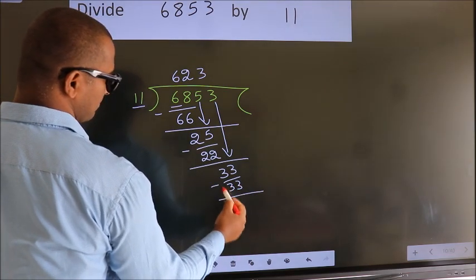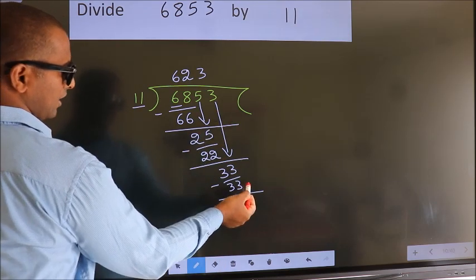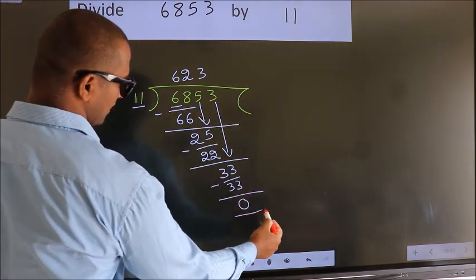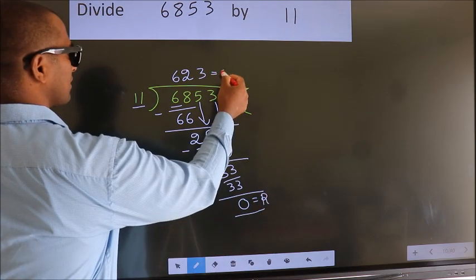Now we subtract. We get 0. No more numbers to bring down, so we stop here. This is our remainder. This is our quotient.